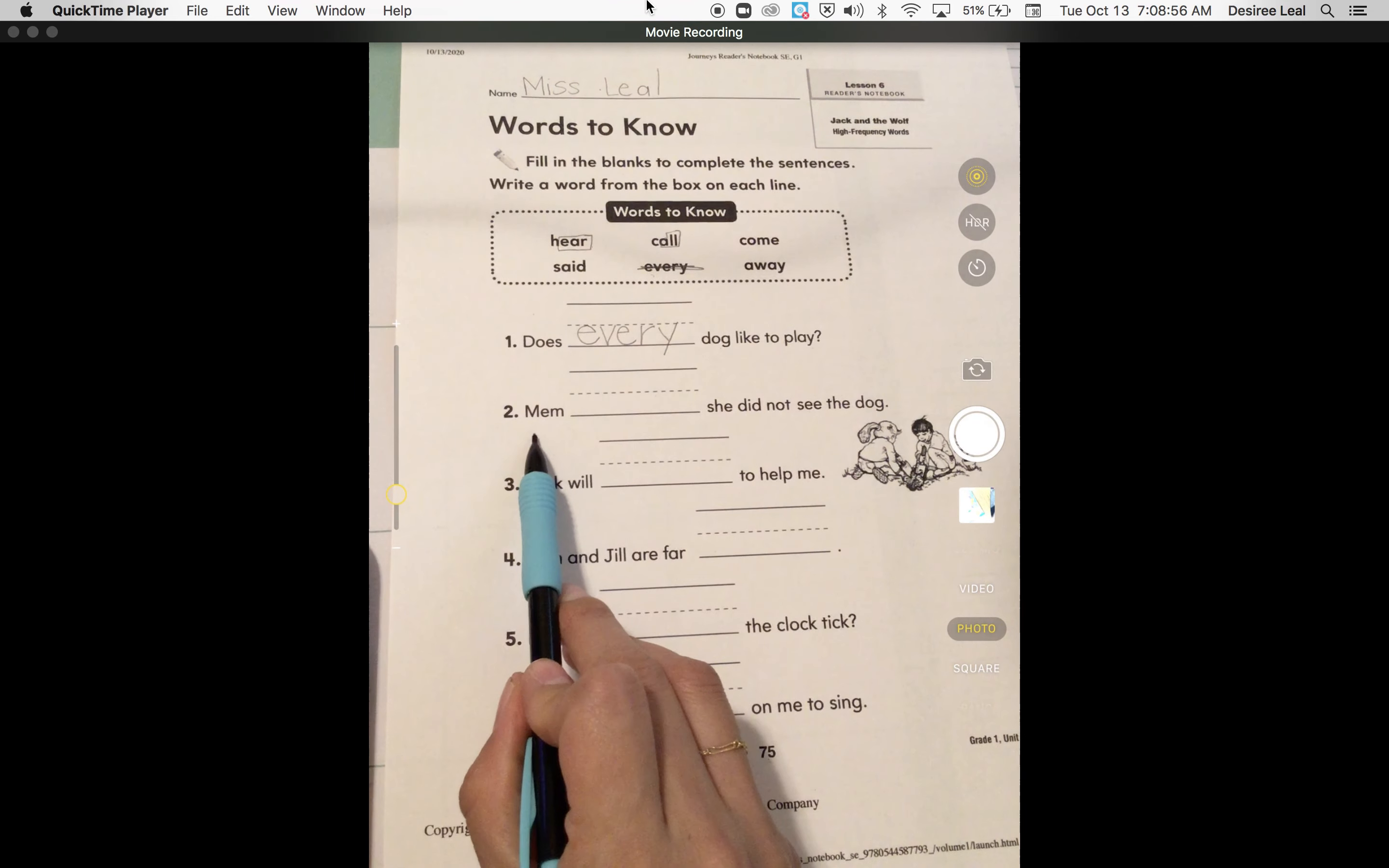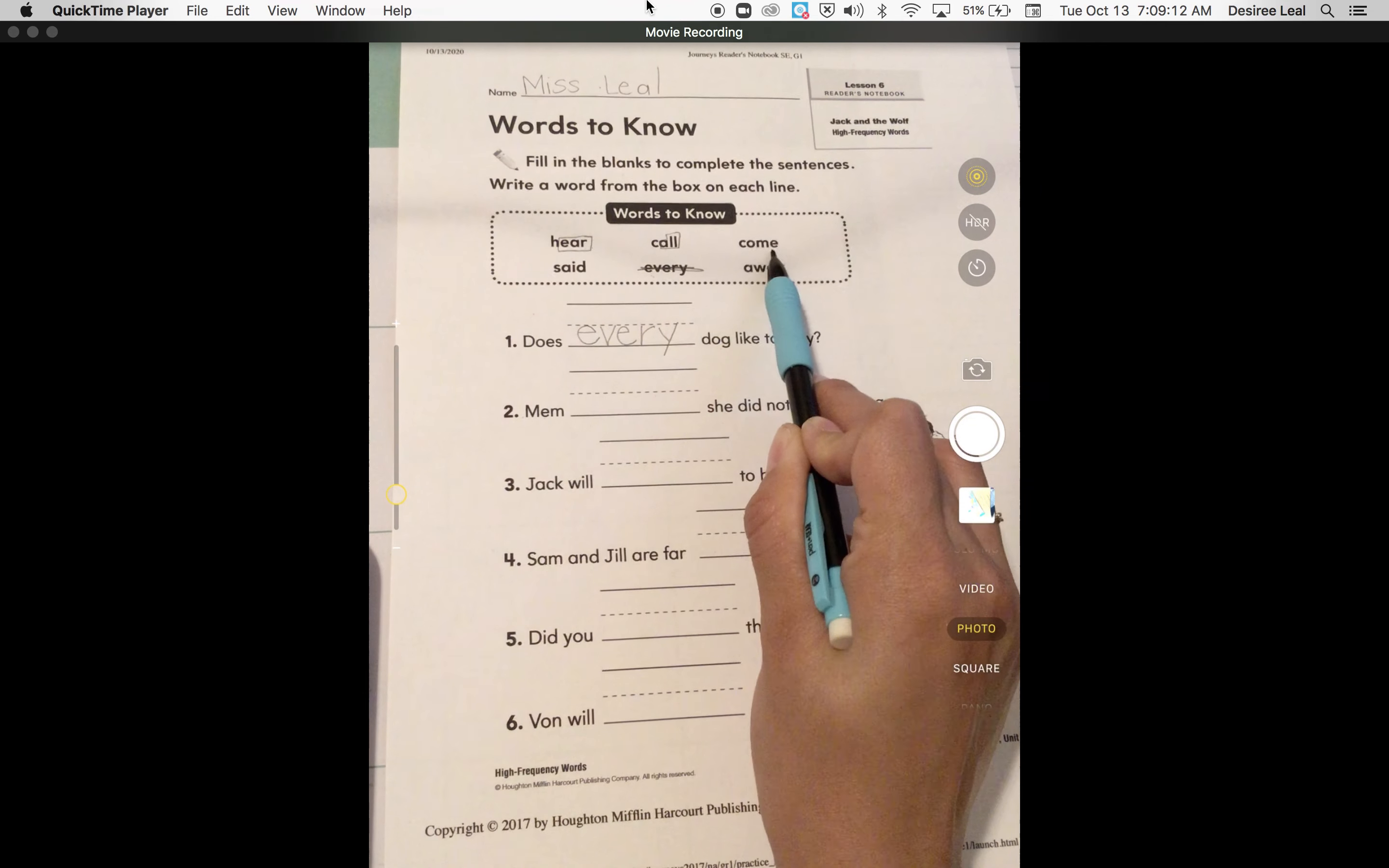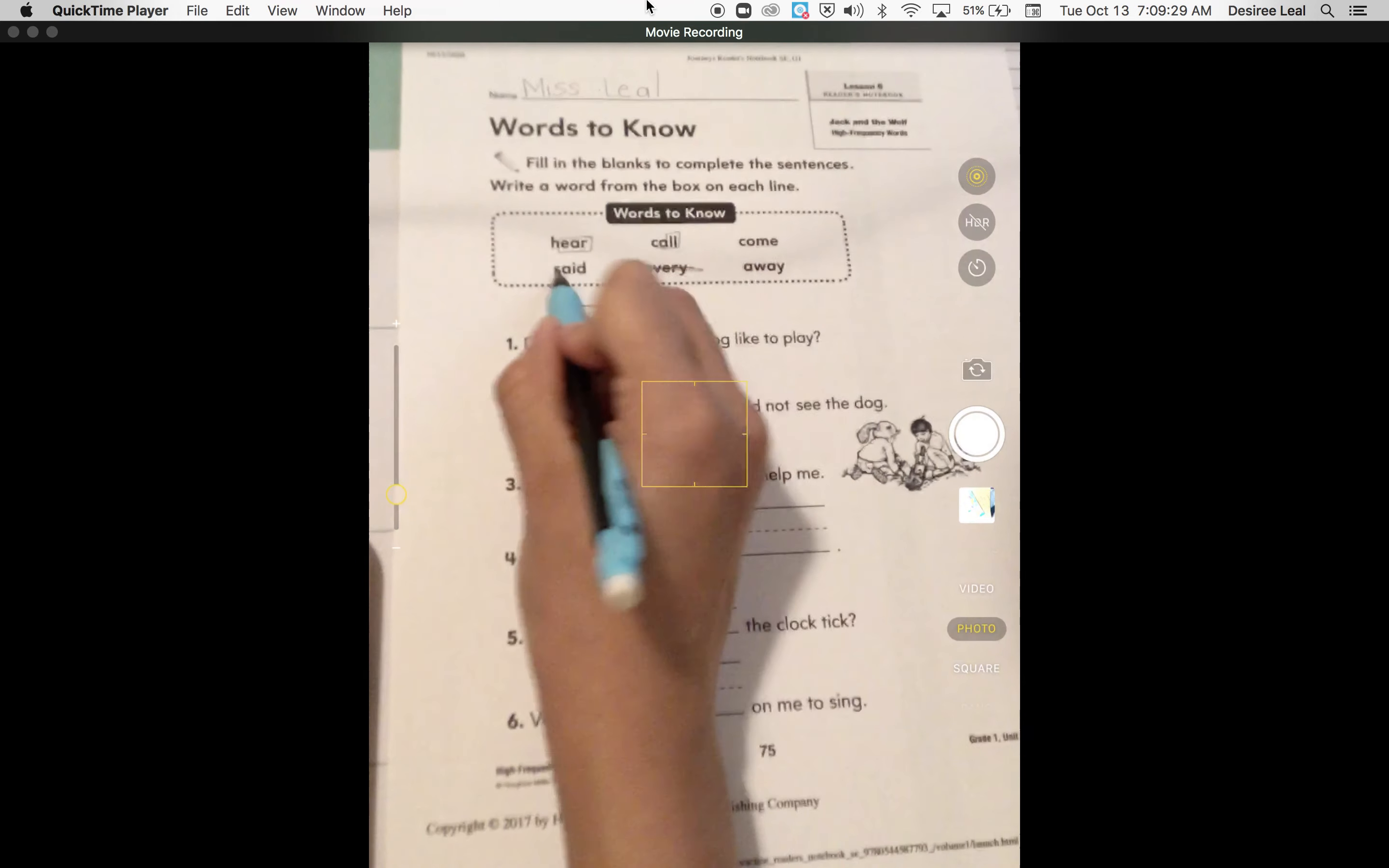Next one is, mom blank, she did not see the dog. Mom hear, she did not see the dog. Mom said, she did not see the dog. Mom call, she did not see the dog. Or mom come, she did not see the dog. Or mom away, she did not see the dog. The one that makes sense is, mom said, she did not see the dog. Said. Go ahead and cross it out.